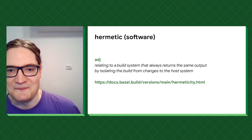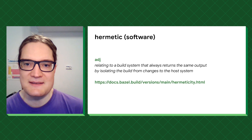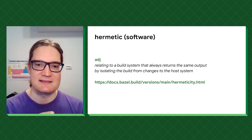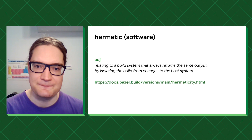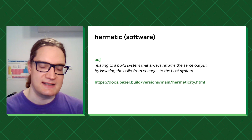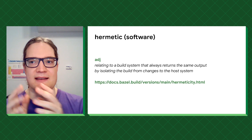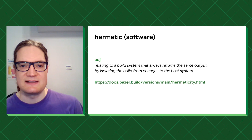After that historical diversion, we can finally come to the point: the definition of hermetic for software builds. A hermetic build is one that always returns the same output by isolating the build from changes to the host system. I took this definition from Bazel's documentation, which has a whole bunch of information about hermeticity. In addition to this definition, it discusses the benefits of hermeticity, such as parallelism, security, and improved debuggability. An implication of this definition is that the dependencies of a build setup are completely understood by the build tool and the humans who wrote it — to me, that is the heart of hermeticity.